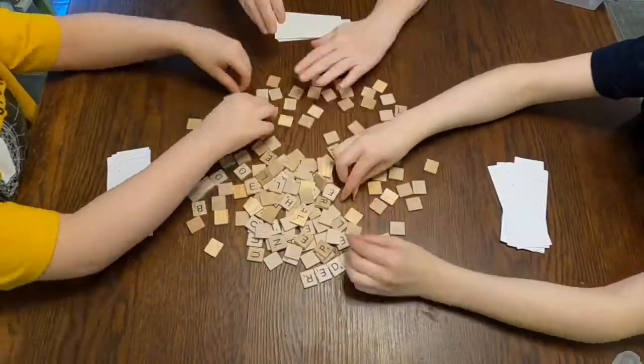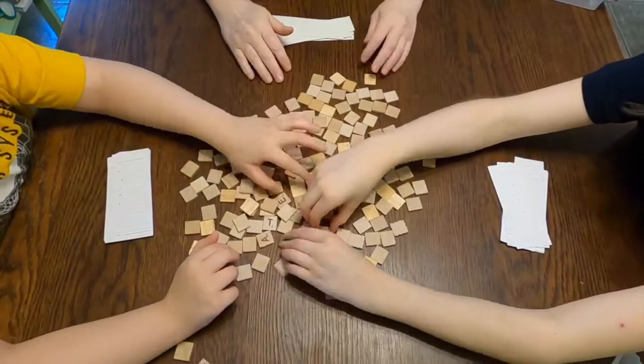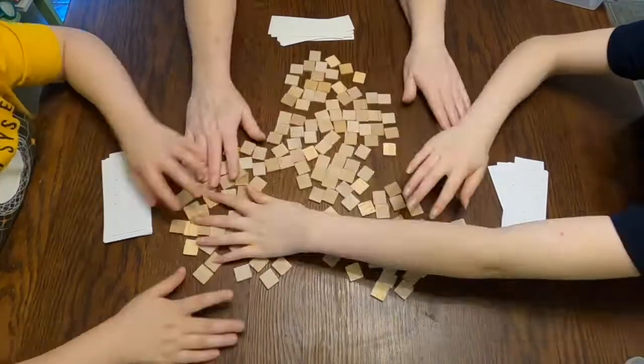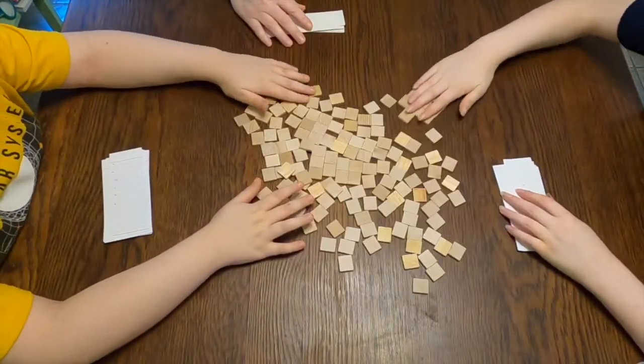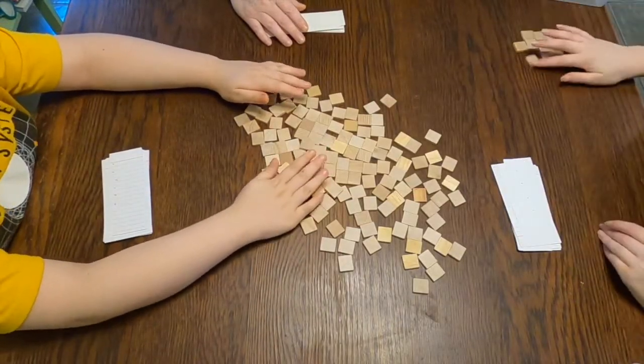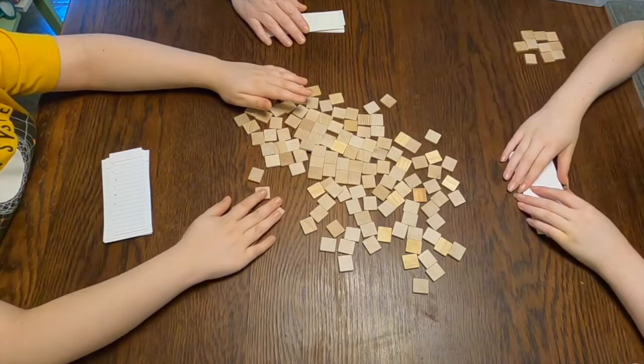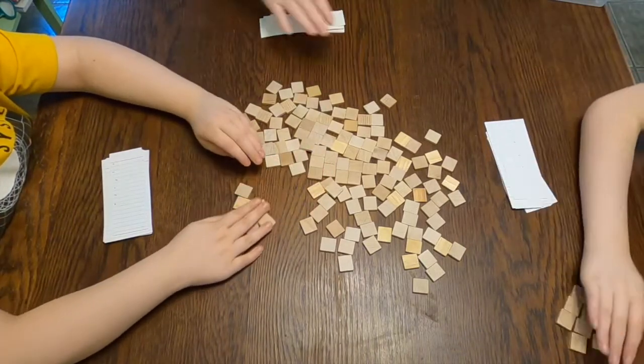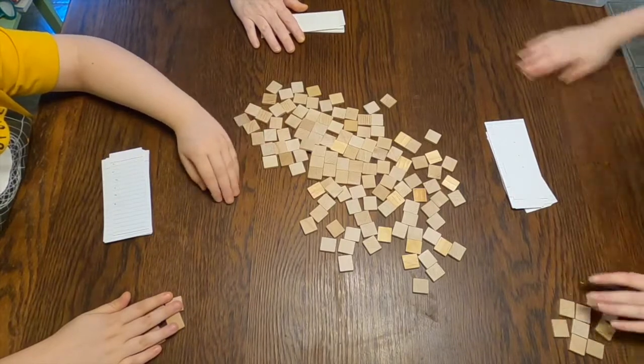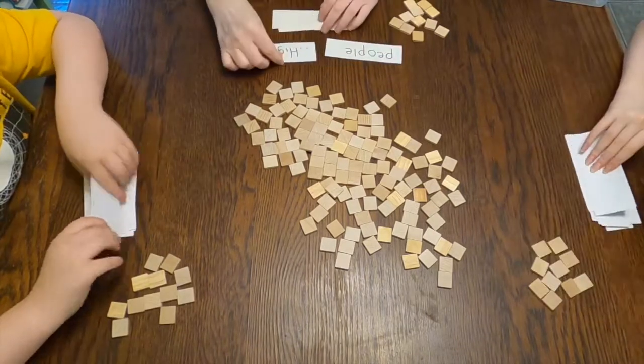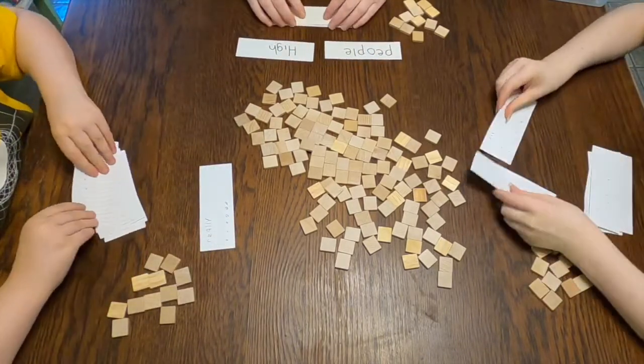Next we're going to flip all of our tiles upside down so you cannot see the letters. So then we'll take a small amount of tiles, say about 10, to put off to the side and we'll leave the big bank of tiles in the center. Next we each flip over two of our words from our deck. These are going to be the two words that we're working on at any given time.